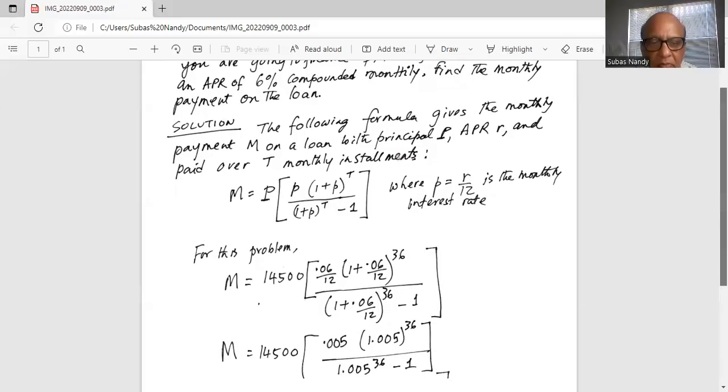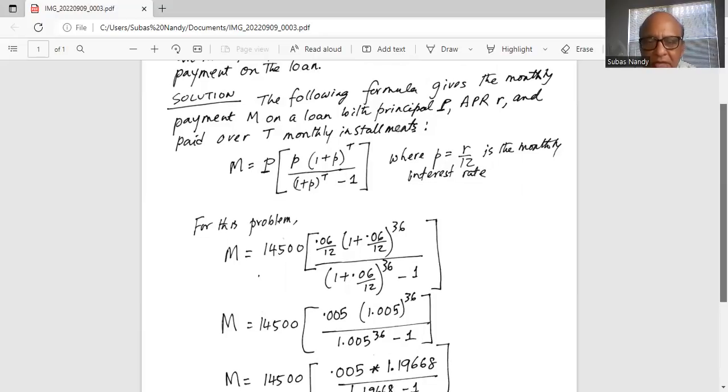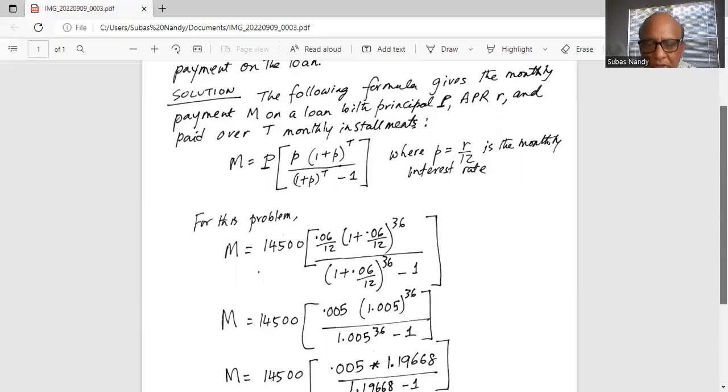For this problem, the monthly payment M equals 14,500 multiplied by small p. Rate is 0.06 divided by 12, multiplied by, in parentheses, 1 plus 0.06 divided by 12, raised to the power of 36.